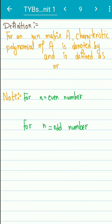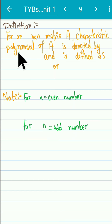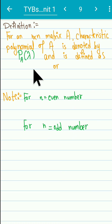Hello friends, welcome to this video. In this video we will be defining what is called the characteristic polynomial and we will see some examples. For an n×n matrix A, the characteristic polynomial of A is denoted by p_A(lambda), since it is related to matrix A and is a polynomial p in variable lambda.